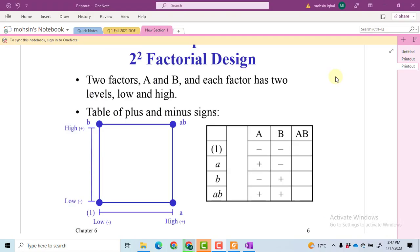This is the most basic 2 raised to power 2 factorial design. We have two factors A and B. Both of them are at high and low. The high is represented by plus whereas the low is represented by minus. Based upon this information, how we will make a design? We will write first of all we make a table with A and B. These are the main factors and we multiply them to get AB. This is the interaction term.